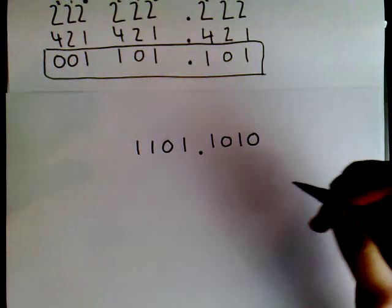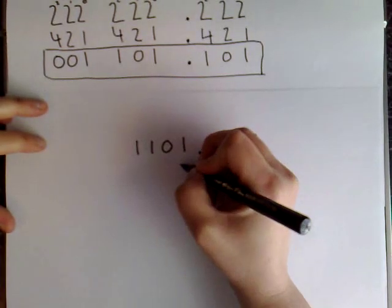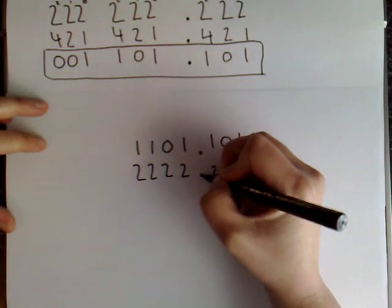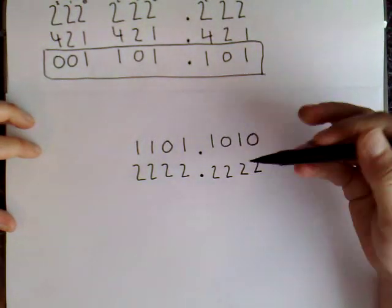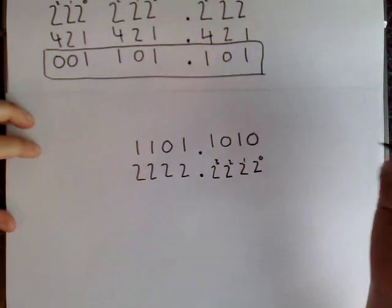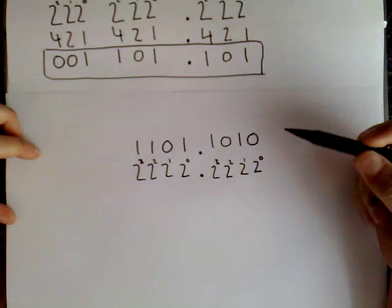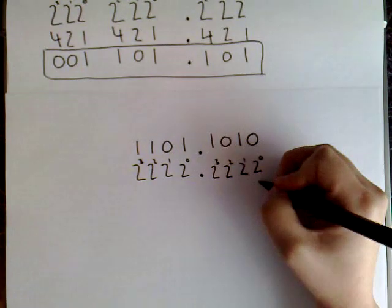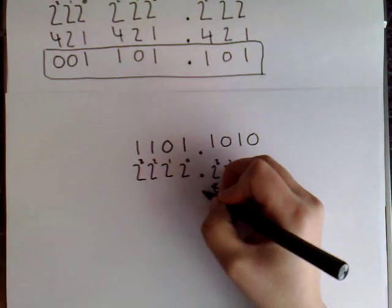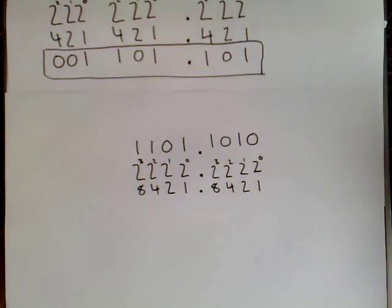So what I do now is, again, I write a series of 2's beneath each digit. Keep my decimal there. And I raise each 2 to a power. So starting at 0, working my way up. 1, 2, 3. 0, 1, 2, 3. And if I just work out what these powers will be. They will be 1, 2, 4, 8. 1, 2, 4, 8.